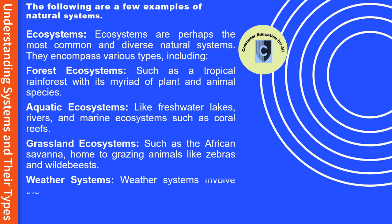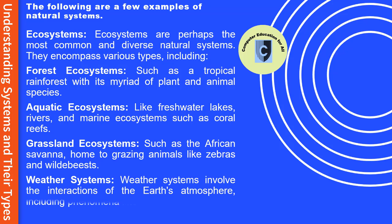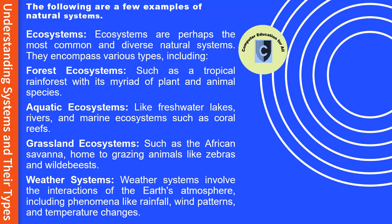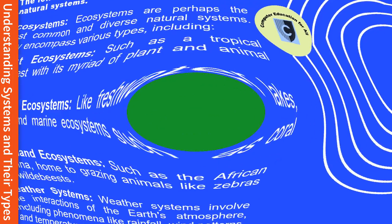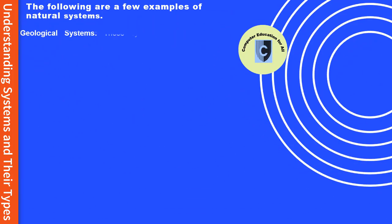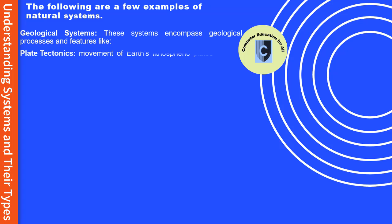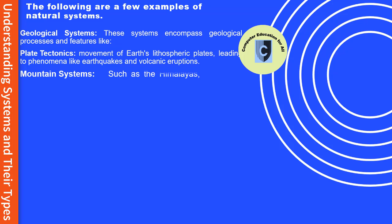Weather systems involve the interactions of the Earth's atmosphere, including phenomena like rainfall, wind patterns, and temperature changes. Geological systems encompass geological processes and features like plate tectonics — the movement of Earth's lithospheric plates — leading to phenomena like earthquakes and volcanic eruptions, and mountain systems such as the Himalayas, formed by tectonic plate collision.